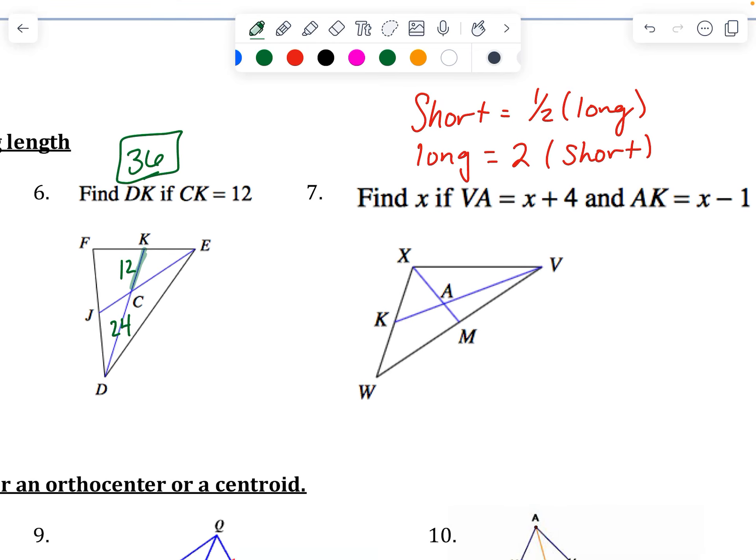And on 7, VA is the long part, X plus 4. That's 2 times the short part, AK, X minus 1. So we're looking at this segment.